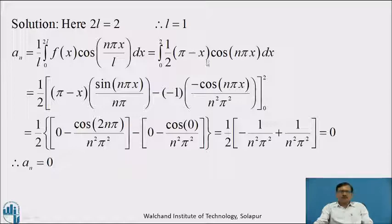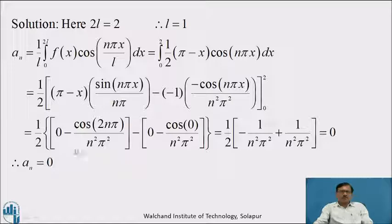Using the generalized law of integration by parts, taking u = (π − x) and v = cos(nπx), and taking ½ outside, we get: ½ [ (π − x) · sin(nπx)/(nπ) − (−1) · (−cos(nπx))/(n²π²) ] from 0 to 2. Putting the upper limit x = 2: sin(2nπ) = 0, so the first term is 0, giving −cos(2nπ)/(n²π²). For the lower limit x = 0: sin(0) = 0, so the first term is 0, giving +cos(0)/(n²π²). Since cos(2nπ) = 1 and cos(0) = 1, we get ½[−1/(n²π²) + 1/(n²π²)] = 0. Therefore aₙ = 0.